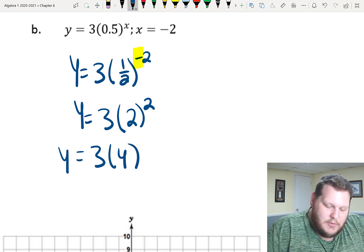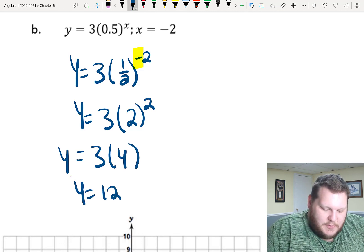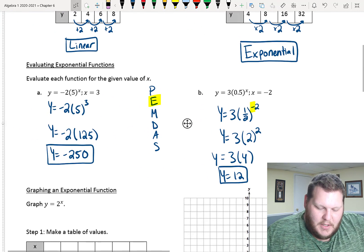So, evaluating the rest of the way, 3 times 2 squared is 4, so 3 times 4 gives me a positive 12. 12 should be my solution there.